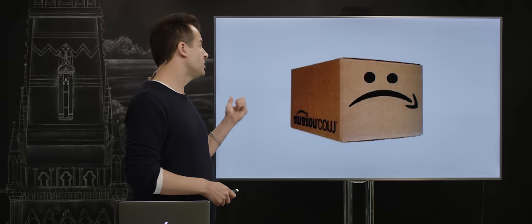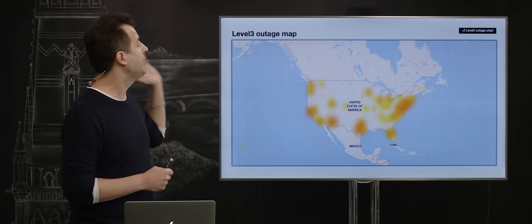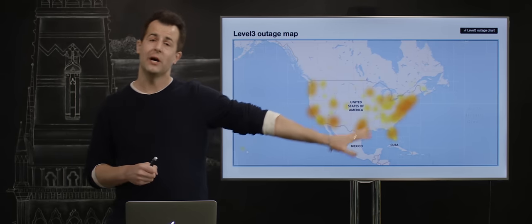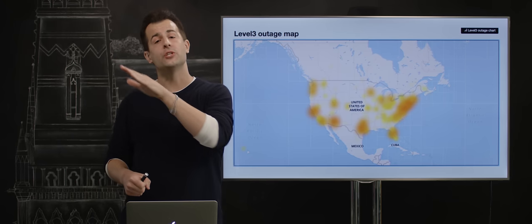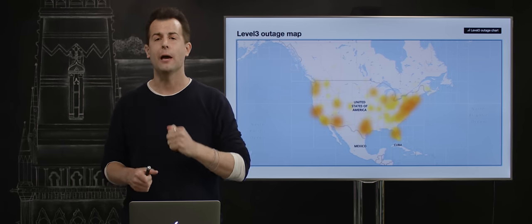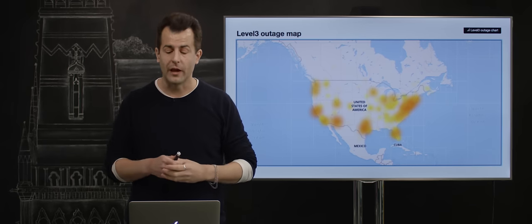Now, unfortunately, something went wrong with one of Amazon's cloud services, something called S3, Simple Storage Service, such that the result, according to one popular ISP called Level 3, was outages across the US, if not beyond, because these websites were relying on at least one of Amazon's services.